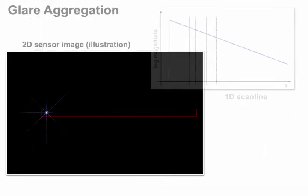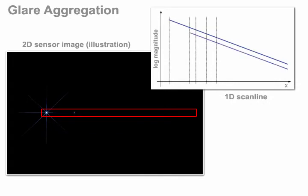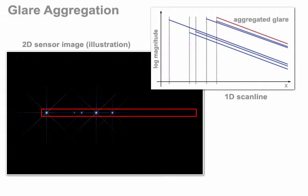In our paper, we show that the superposition of multiple exponential glare patterns yields an aggregated glare that corresponds to an exponential function with the same slope as the individual contributions.